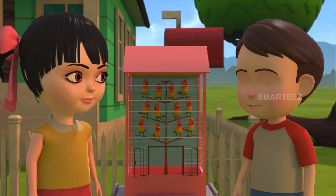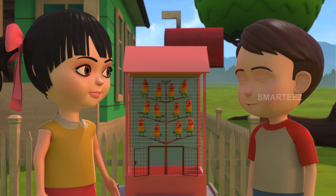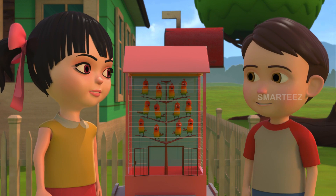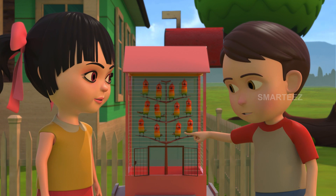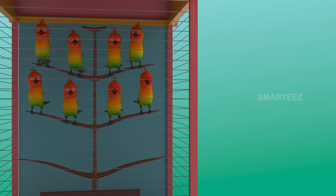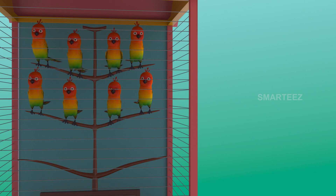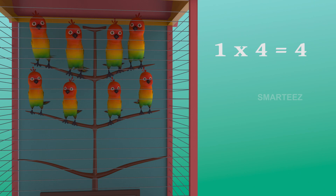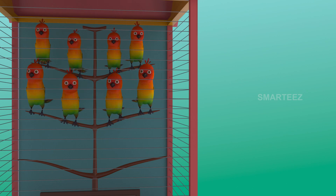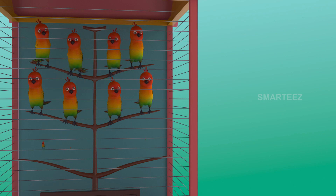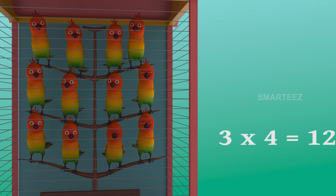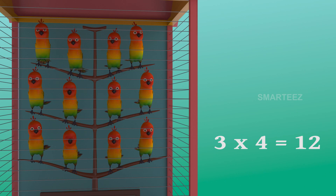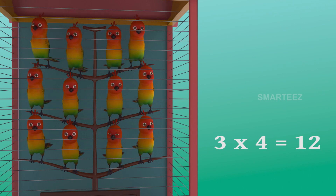These four will make it twelve. Yes, three fours make it twelve. One four is four. Two fours are eight. And three fours are twelve. The parakeets are settling in the cage as sets of four. The first set had four parakeets. The second set of four made it eight. Now the third set of four parakeets joins the eight parakeets and makes it twelve parakeets. So three sets of four parakeets make it twelve parakeets.